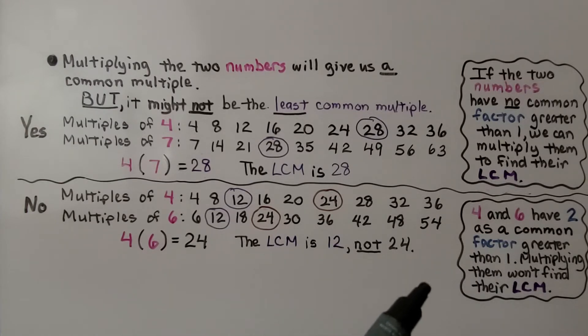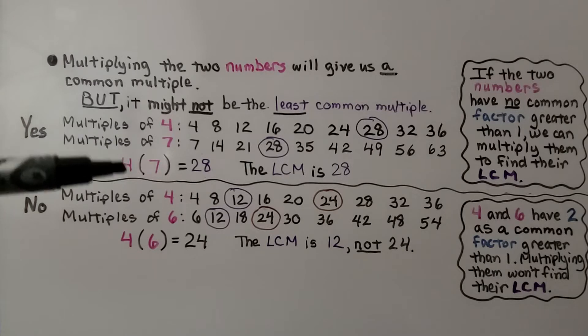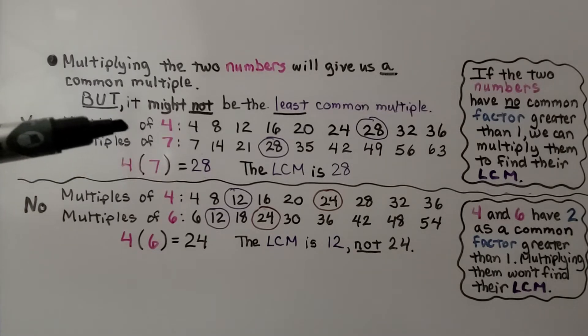And 4 and 6 have 2 as a common factor greater than 1. Multiplying them won't find their LCM. It worked for 4 and 7 because they don't have a common factor greater than 1.